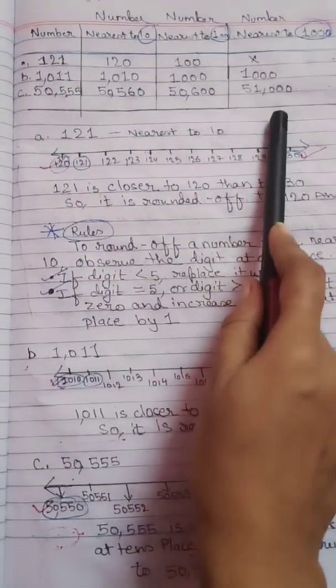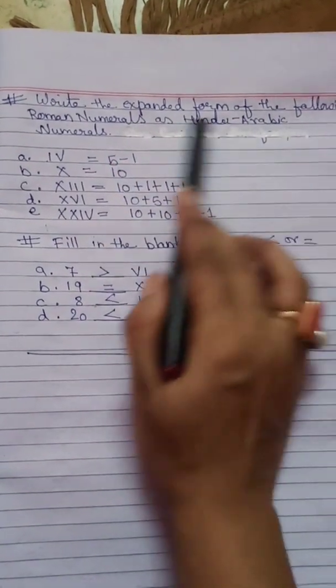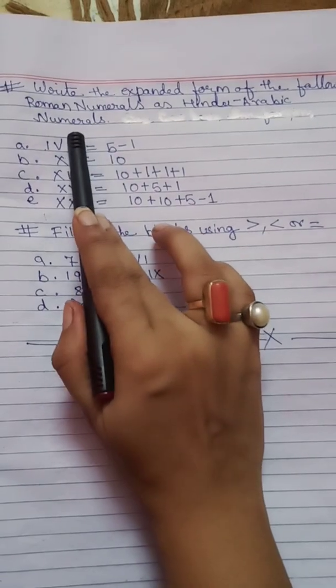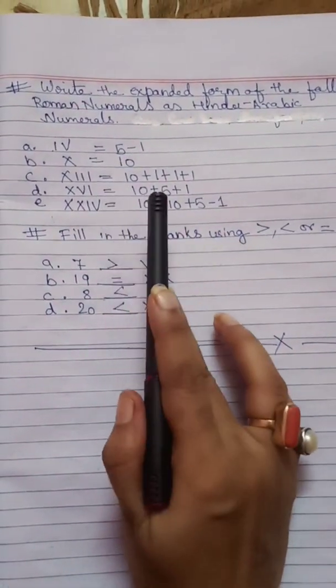Now we will move to Roman numbers from 1 to 50. On the screen you can see Hindu-Arabic numerals written on one side and Roman numerals on the other side. We have already done this in assignment 1. You have to do it again in this assignment for a revision of Let's Practice 5. You just need to understand — if you can learn this, you can do the expanded form and fill in the blanks easily.